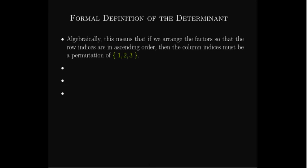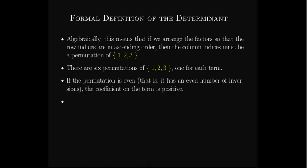What this means is that if we arrange the factors so that the row indices are ascending — always going 1, 2, 3 — then the column indices are a permutation of those three numbers. There are six permutations, so that's how we get six terms. If the permutation is even, meaning it has an even number of inversions, the coefficient is positive. If the permutation is odd, the coefficient is negative.